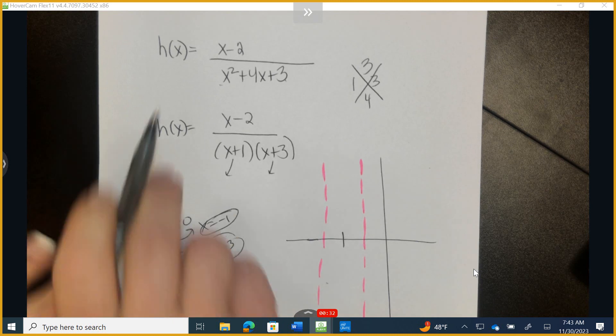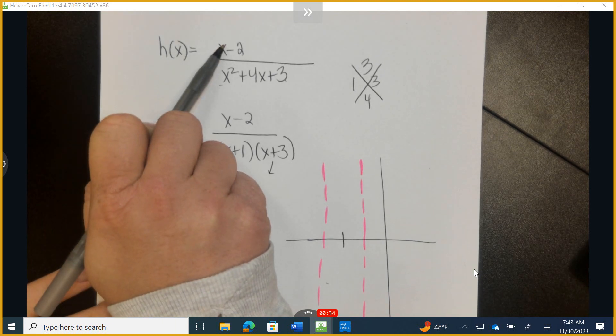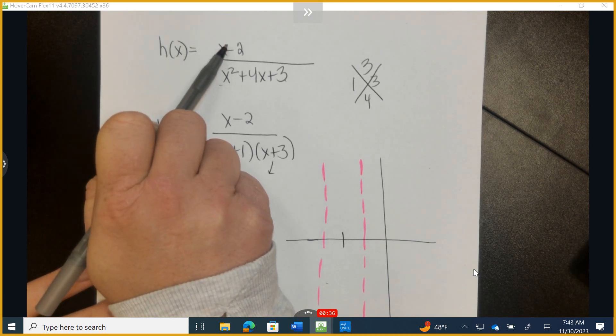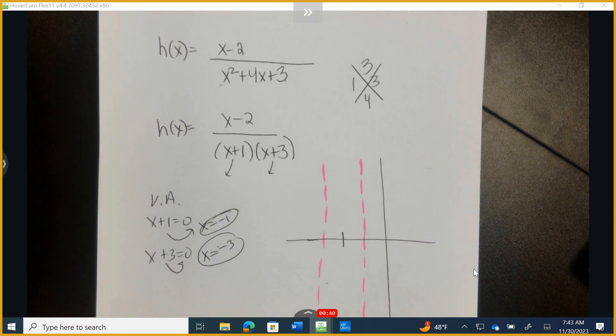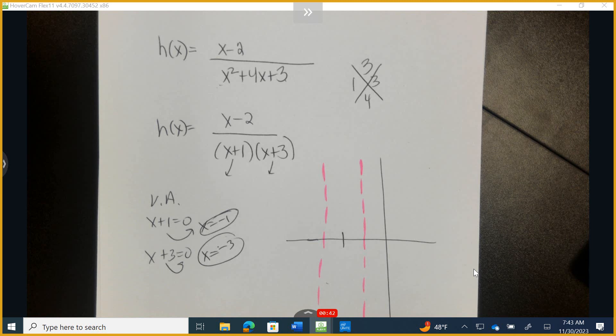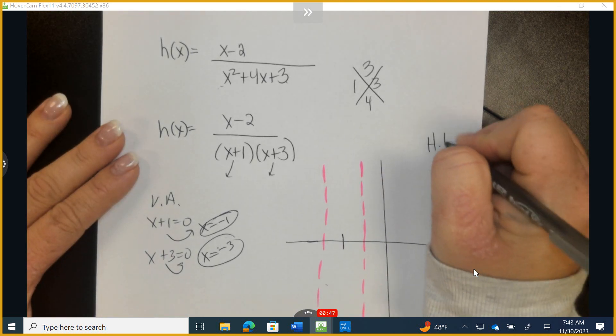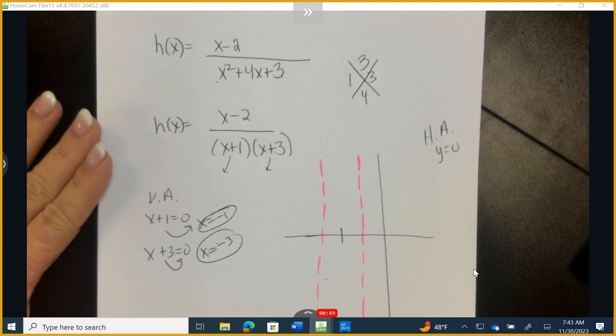As a quick reminder, when the degree in the numerator is less than the degree in the denominator, what do we always have? You've got to be more specific. Horizontal asymptote at 0. So horizontal asymptote at y equals 0.